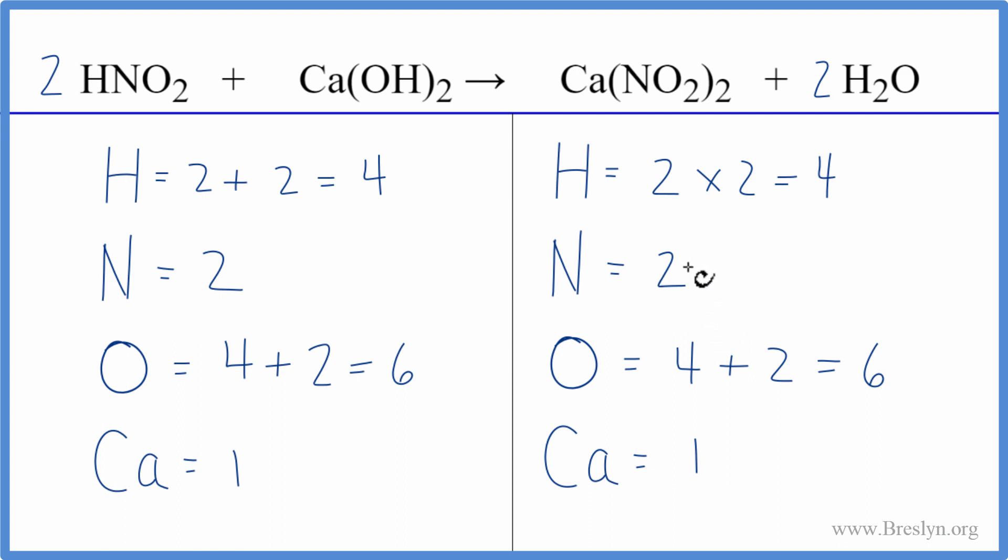So two keys here. One, remember that these subscripts, when they're outside the parentheses, they apply to everything in the parentheses. The other thing is, it's often helpful to leave the hydrogens and oxygens last when you're balancing equations. This is Dr. B with the balanced equation for HNO2 plus Ca(OH)2. Thanks for watching.